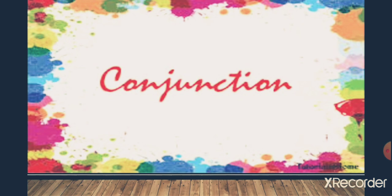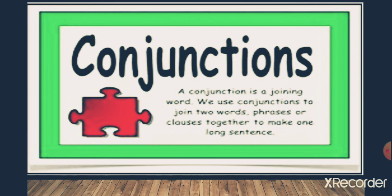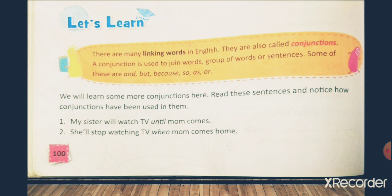Today we are going to learn again about conjunctions. So what is a conjunction? A conjunction is a joining word. It is also called a linking word. It is used to join two words, phrases, or clauses together to make a long sentence. We have already learned that conjunctions are also called linking words. They are used to join words, group of words, and sentences. Some examples are: and, but, because, so, or, as.